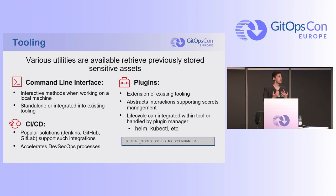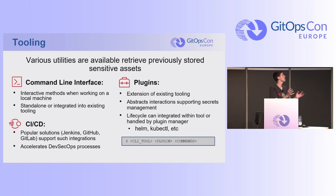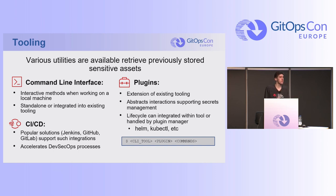Finally, there are plugins for tooling — a lot of plugins out there to integrate secret utilities. They are extensions of existing systems and they support the lifecycle of secrets management. There are plugins for kubectl and Helm; Helm has an extensive plugin system. Also, there are package managers specifically designed for plugins — Krew for Kubernetes is a plugin management system. The convention is 'kubectl [plugin name] [subcommand],' for example kubectl secrets-management encrypt.